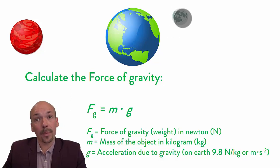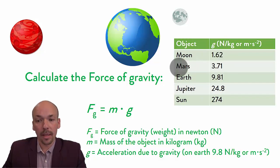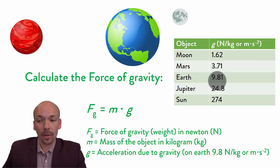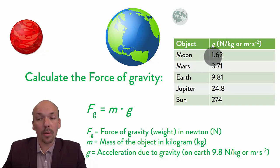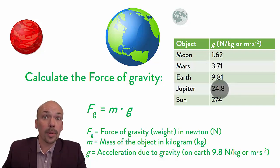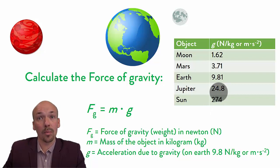If we look at the Earth, the moon, and Mars, then the g — the acceleration due to gravity — is different. You can see them here in the table: the moon, Mars, Earth, Jupiter, and the sun. Earth is 9.81 — it differs a bit depending on where you are on Earth, so we use 9.8. Mars is a lot lighter than Earth, so the acceleration due to gravity is also a lot less — on Mars it's only 3.71, and on the moon it's 1.62. But if you go to Jupiter or the sun, they're both a lot heavier, so the gravitational acceleration becomes a lot higher and it costs you more force.